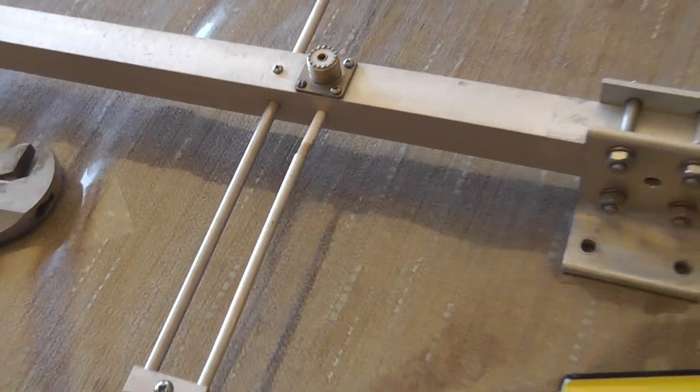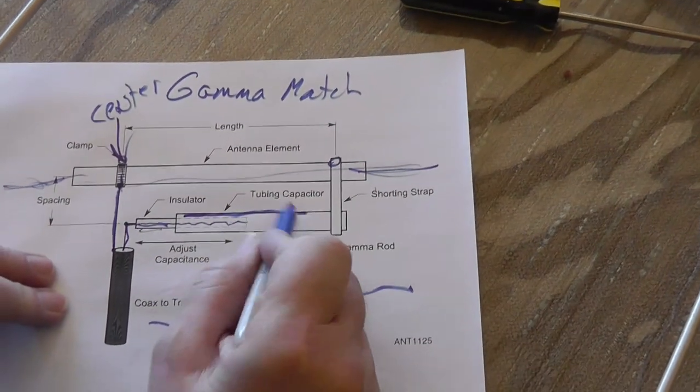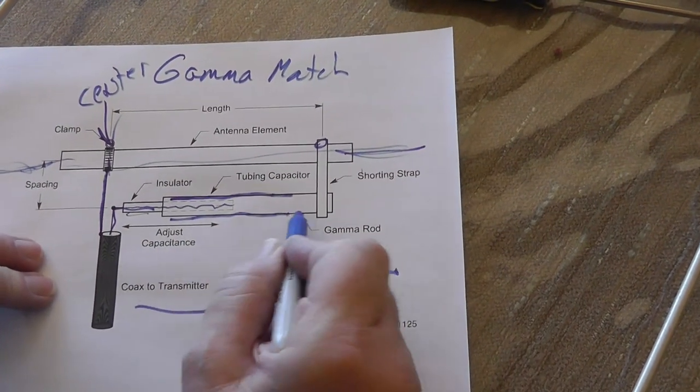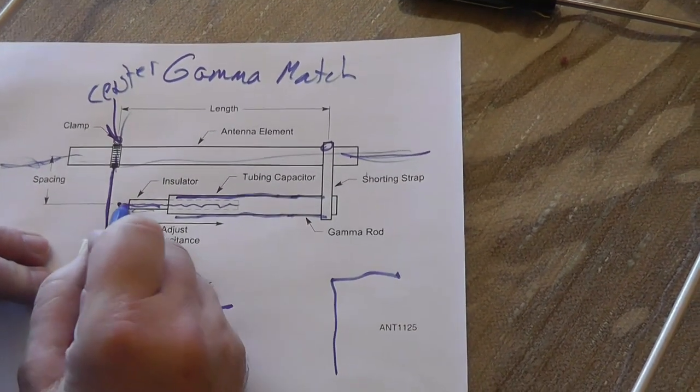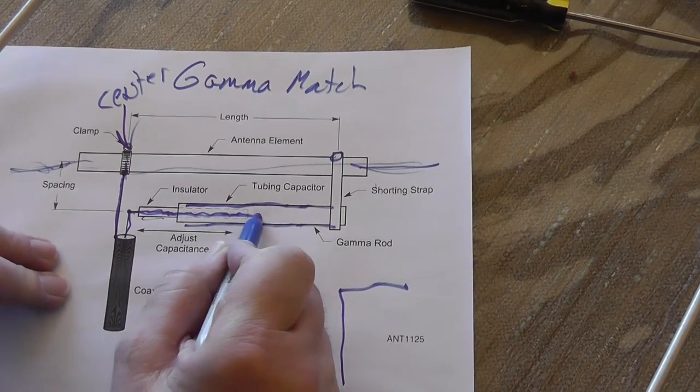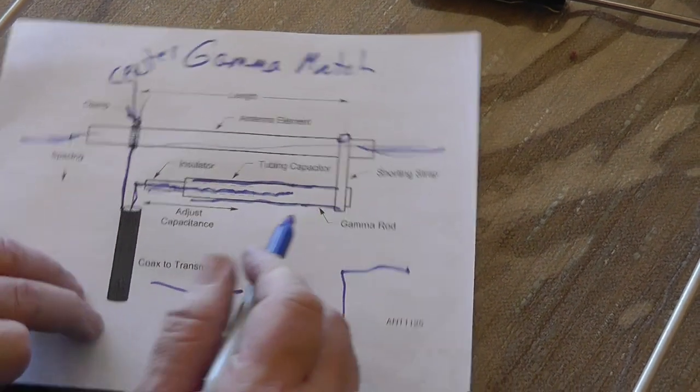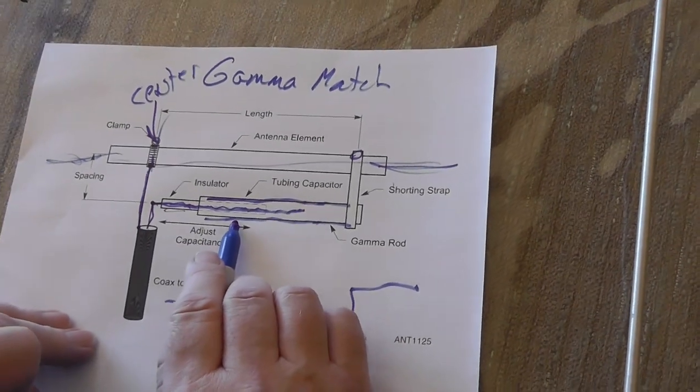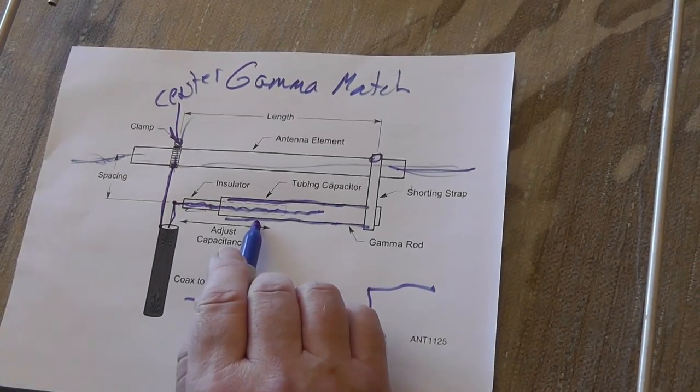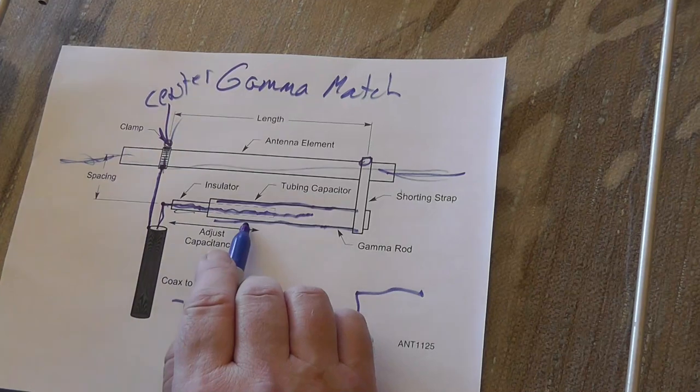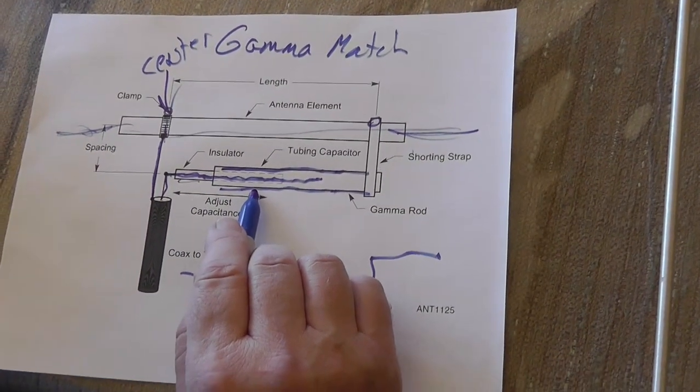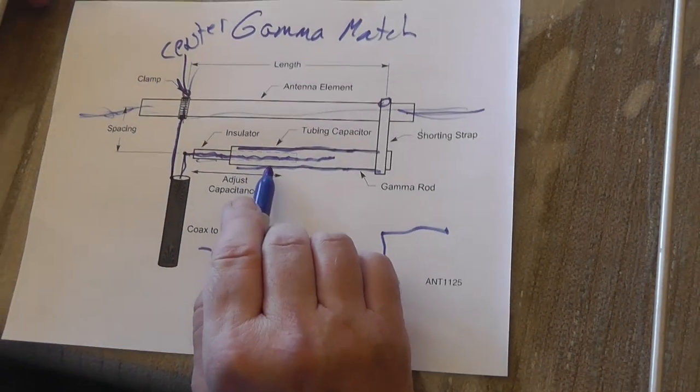And then this goes in here and this plate and this plate, which are attached to here, form a capacitor with this rod right here. So as you move this in and out, you change the capacitance. And you'll want to check this with your antenna tuner every time you do so.